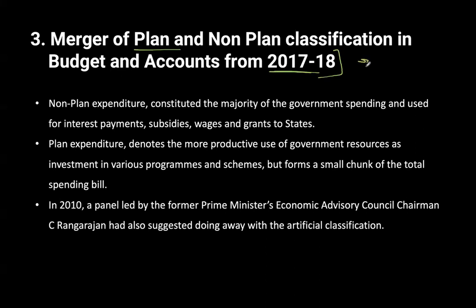Secondly, advancement of the budget cycle - the budget is presented on 1st of February of the current financial year. The third reform is we also merged the planned and the non-planned classification of expenditure. Non-planned expenditure constituted the majority of government spending - it was money you had to give anyway, you had no choice. For example, interest payments - whatever borrowings the government has made, you have to pay the principal amount and the interest.